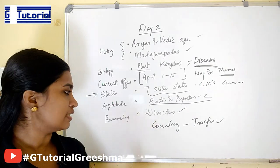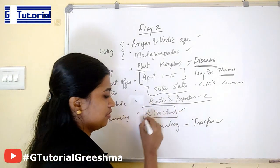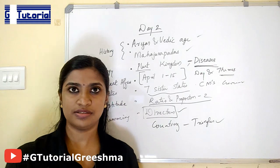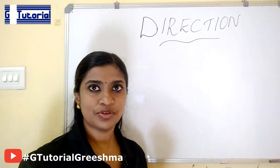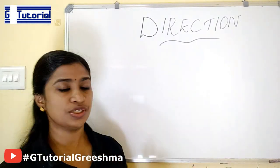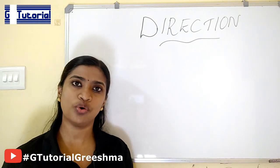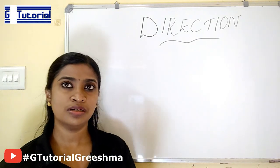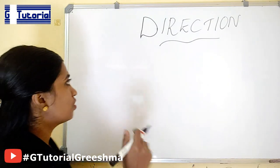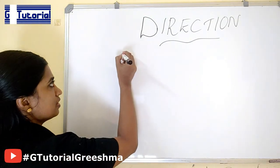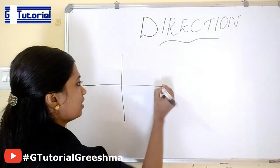In this class I will be teaching you directions. So we can go for that. Directions is the easiest topic where you can score marks. Only 3 types of problems will be asked from this section. First, we have to understand the different directions.